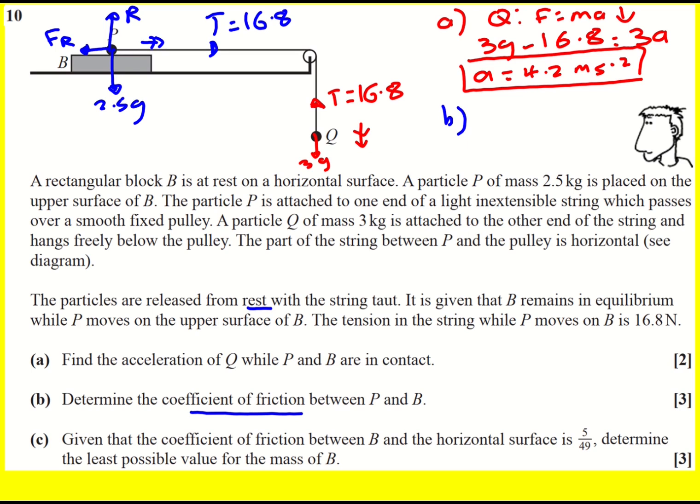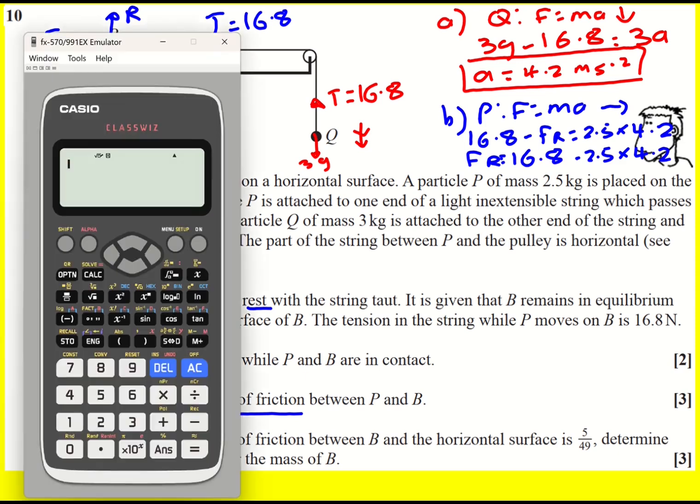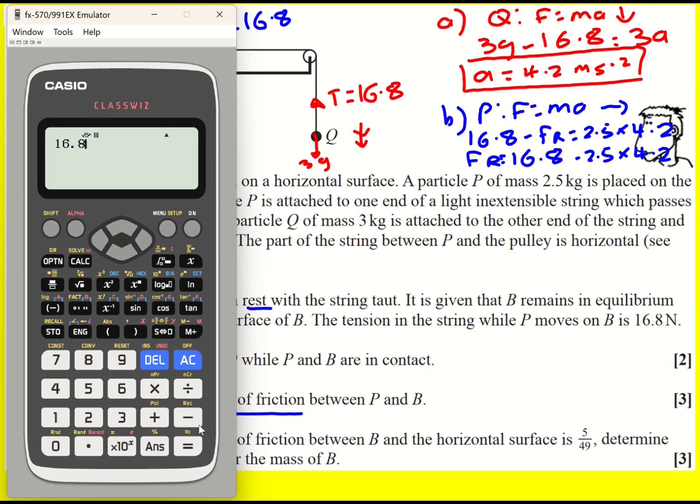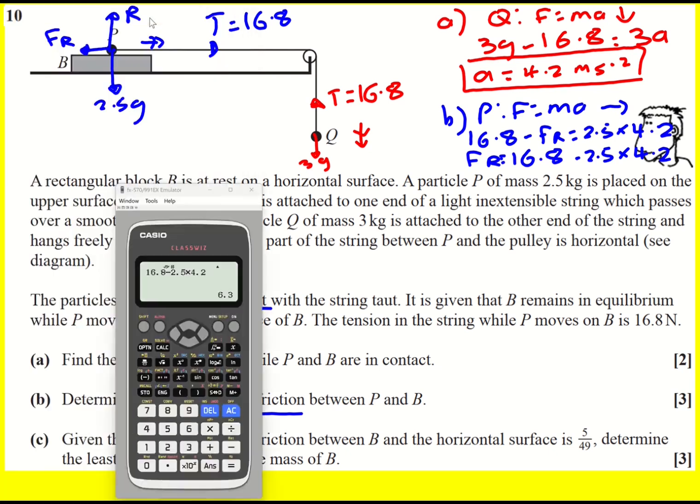Therefore I can work out the frictional force by focusing on P and applying F equals MA to the right. The tension, 16.8 minus our frictional force is going to equal 2.5 times 4.2. And I can rearrange that to give FR equals 16.8 minus 2.5 times 4.2.